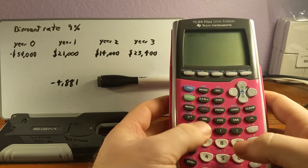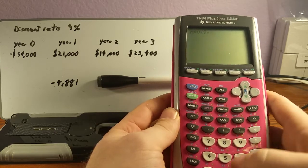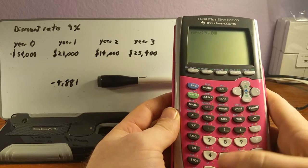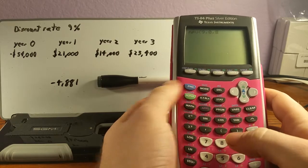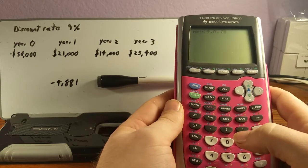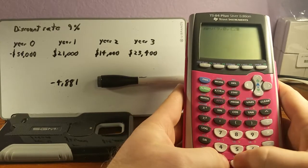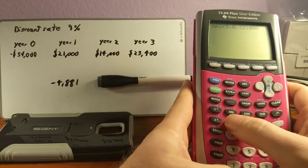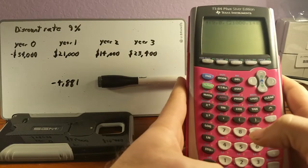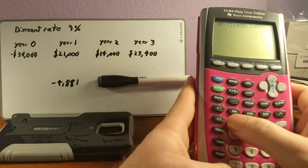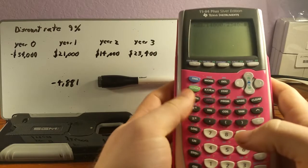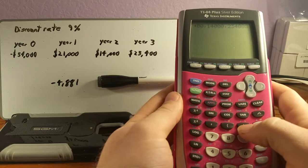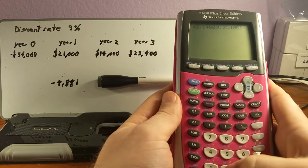Discount rate is 9%, and then we're going to put in zero for how much we paid out. Come up here to our second key and do our opening curly brace and start with our $21,000, $14,000 for year two, $23,400 for year three. And then we'll use our second key and our closing curly braces to finish that part out.